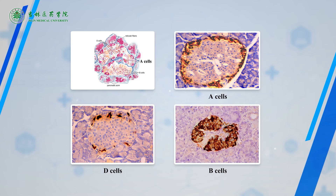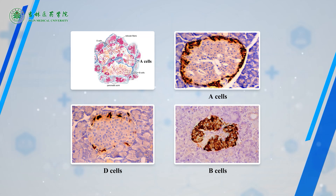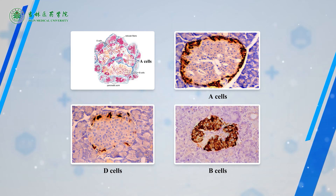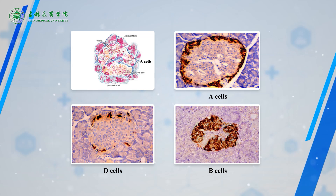A cells constitute 20% of the islet cell population, are relatively large in size, and are usually located at the periphery of the islet. A cells secrete glucagon, which increases the rate of conversion of liver glycogen to glucose.